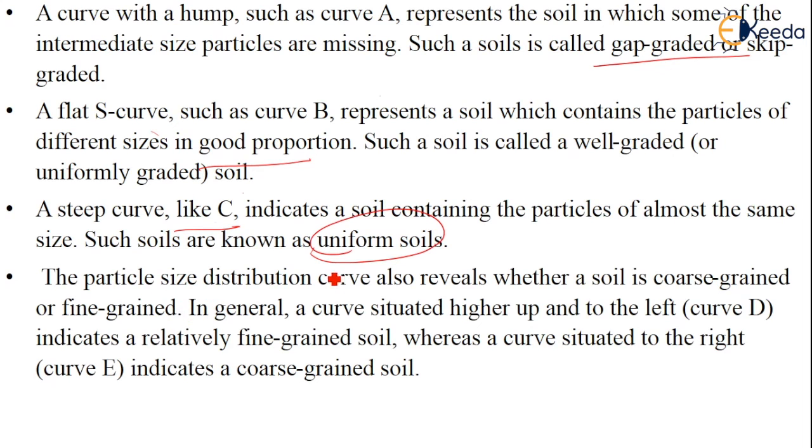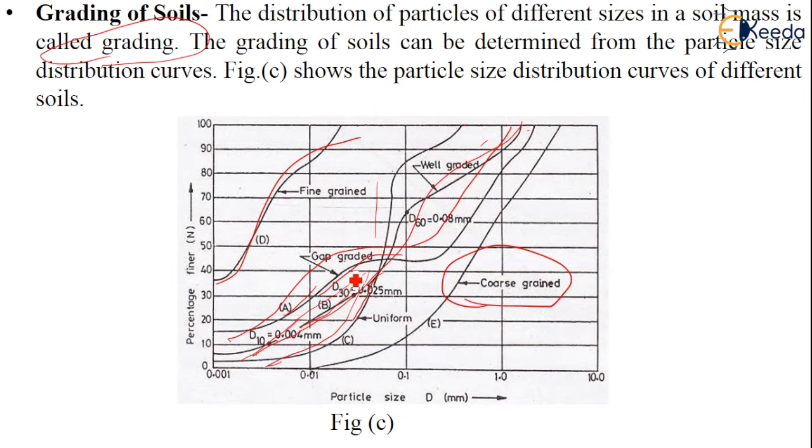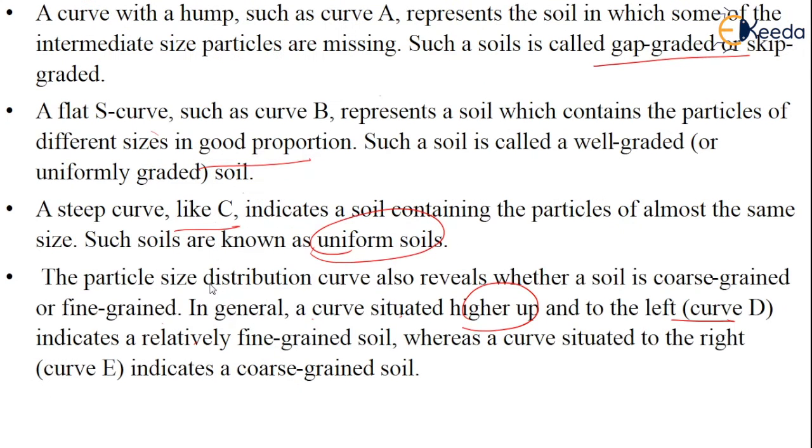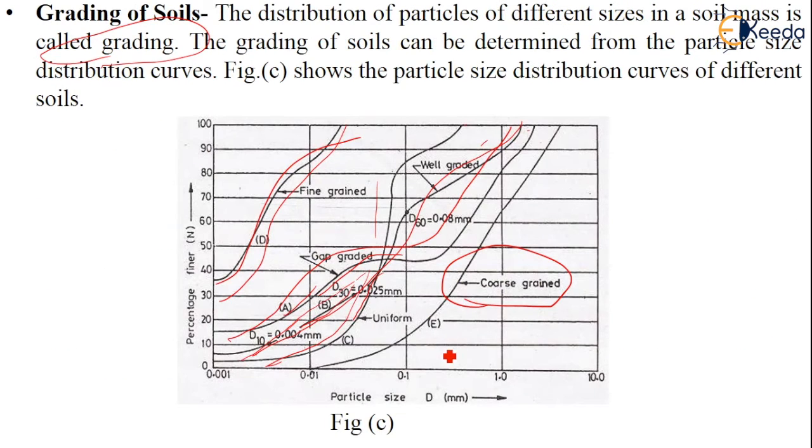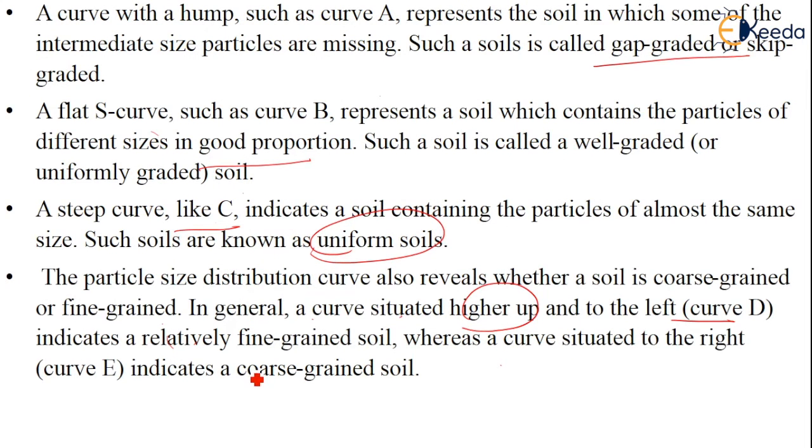The particle size distribution curve also reveals whether a soil is coarse-grained or fine-grained. In general, a curve situated higher up and to the left, like curve D, indicates a relatively fine-grained soil, whereas a curve situated to the right, like curve E, represents coarse-grained soil.